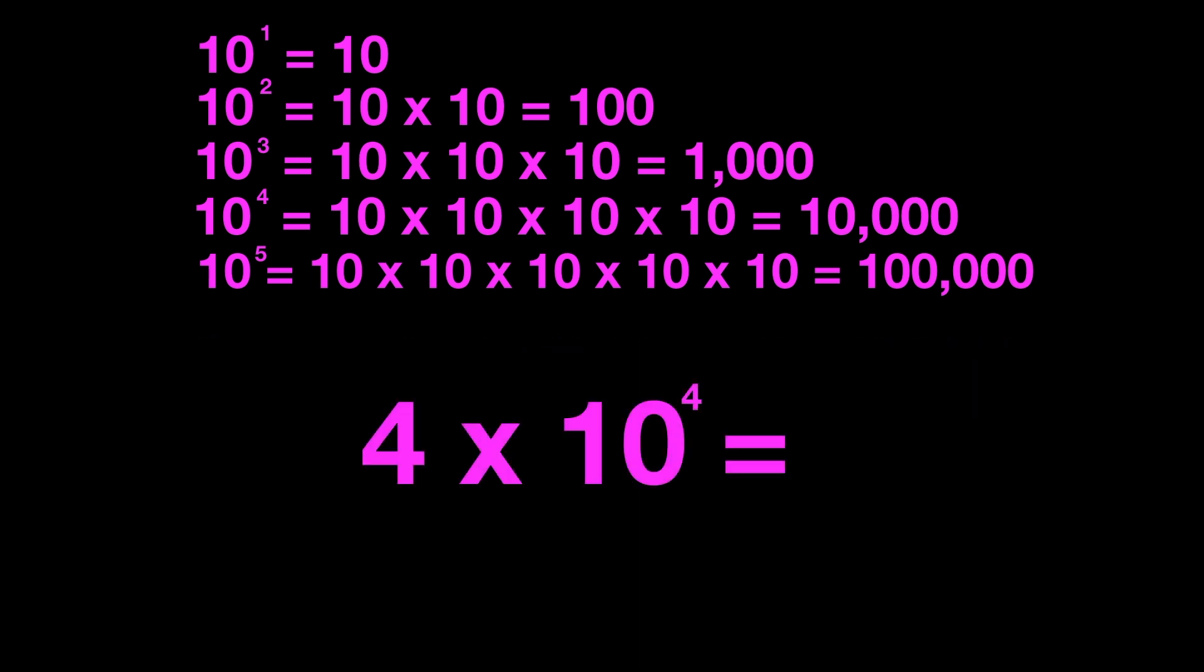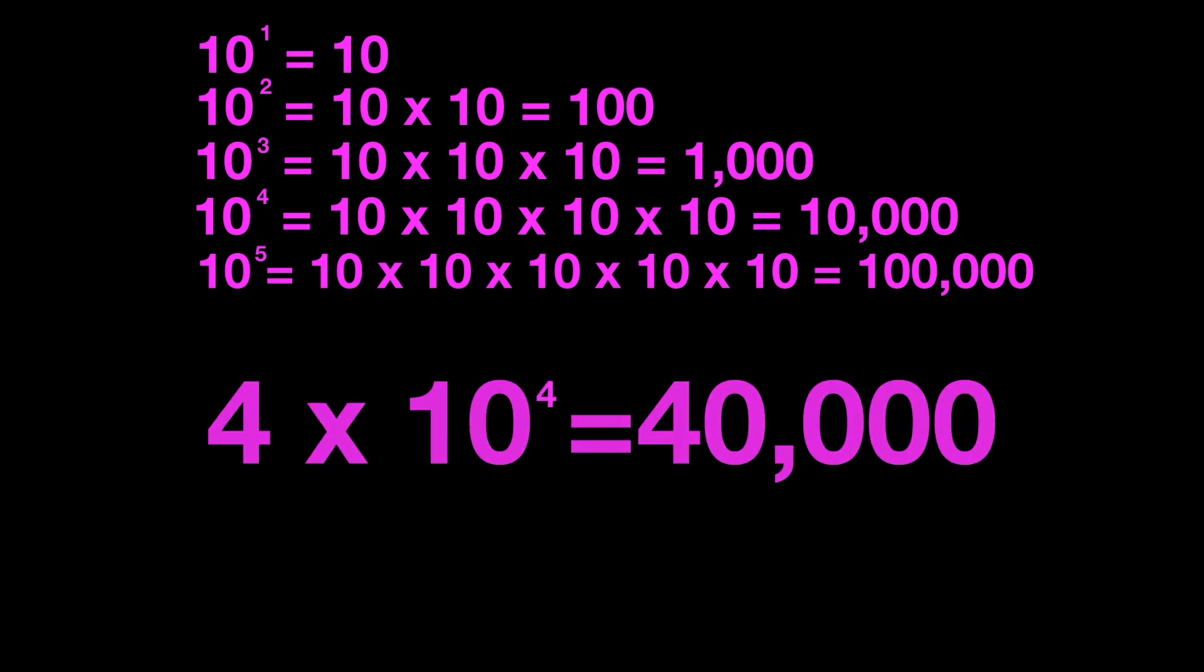How about 4 times 10 to the fourth power? What would that look like as a number in standard form? You got it. 40,000. There would be 4 zeros on that number.